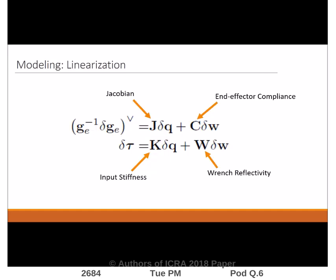Linearization of this general model provides the manipulator Jacobian, end-effector compliance, input stiffness, and wrench reflectivity matrices, which allow us to examine the effect of design parameters on dexterity, force application, and force sensing ability.